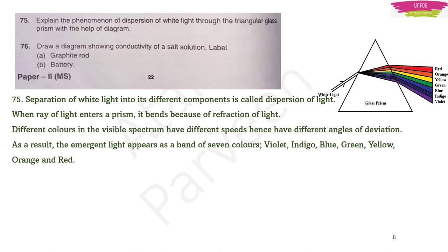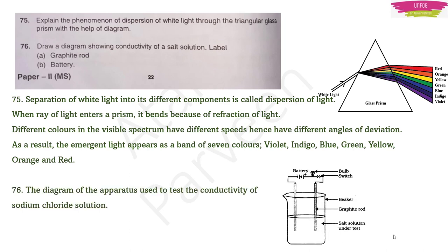Question 76: Draw a diagram showing the conductivity of a salt solution. Label the graphite rod and battery. Draw a beaker with salt solution, insert graphite rods, and make a circuit with a switch and bulb connected to a battery. This diagram demonstrates how the salt solution conducts electricity.